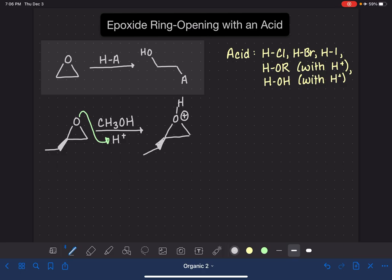And this should kind of remind you of SN1, SN2 reactions, where we were trying to protonate like a bad leaving group to turn it into a better leaving group. Once we get the epoxide protonated, we are then ready to use the acid,